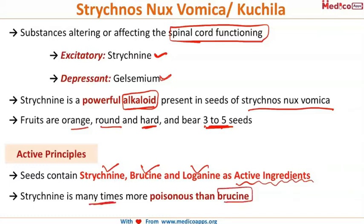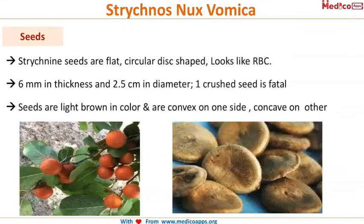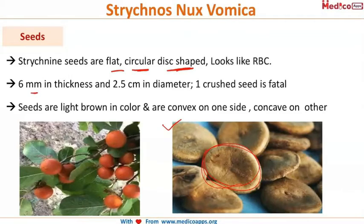Strychnine is many times more poisonous than brucine, making it the strongest poison amongst all the active ingredients. Looking at the picture, strychnine seeds are flat, circular, and disc-shaped — they are 6 millimeters thick and 2.5 centimeters in diameter. An important point: just one crushed seed is fatal to a human being.